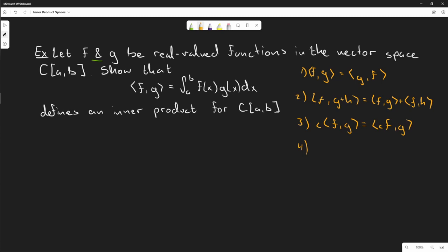The last one is <f,f> is greater than or equal to zero, and <f,f> equals zero if and only if f is zero. You have to show that each one of these is true.